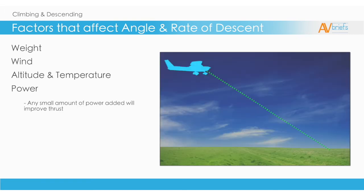Power: any small amount of power added will improve thrust. Power will counteract drag. It reduces the rate of descent and it increases glide distance.